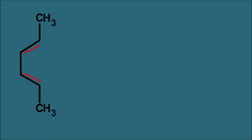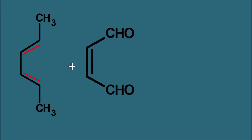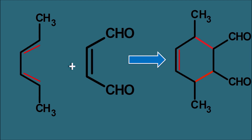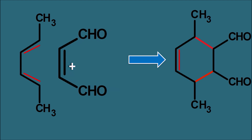In the first example, a diene with methyl groups at the terminals reacts with a dienophile bearing aldehyde functional groups at the terminals. These electron-withdrawing groups increase the reactivity of the dienophile. In the presence of light or thermal energy they produce a product. To draw the product, we shift the molecule, make two new bonds, erase the two reacting bonds, and shift the double bond to its new position. In this way we can easily draw the structure for the Diels-Alder product.